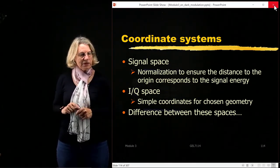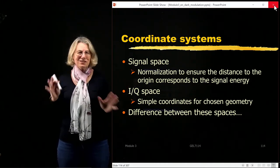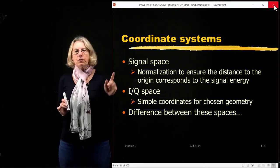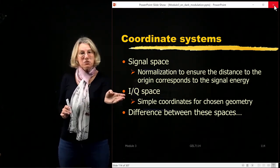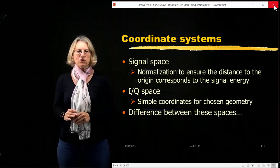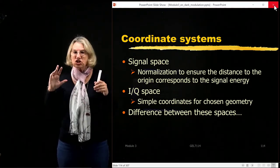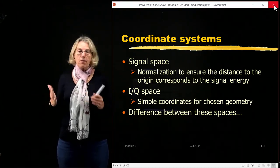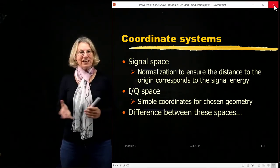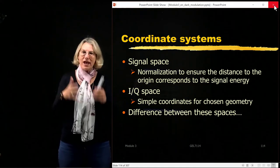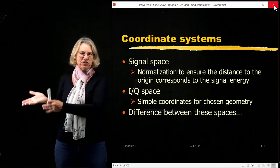IQ space is not ideal for finding the minimal distance — it's possible but prone to errors. What we prefer is signal space, which is essentially IQ space but with the correct normalization. That normalization ensures all distances are referenced to the average energy per symbol, so that when we calculate the actual average energy, we do get the average energy per symbol.